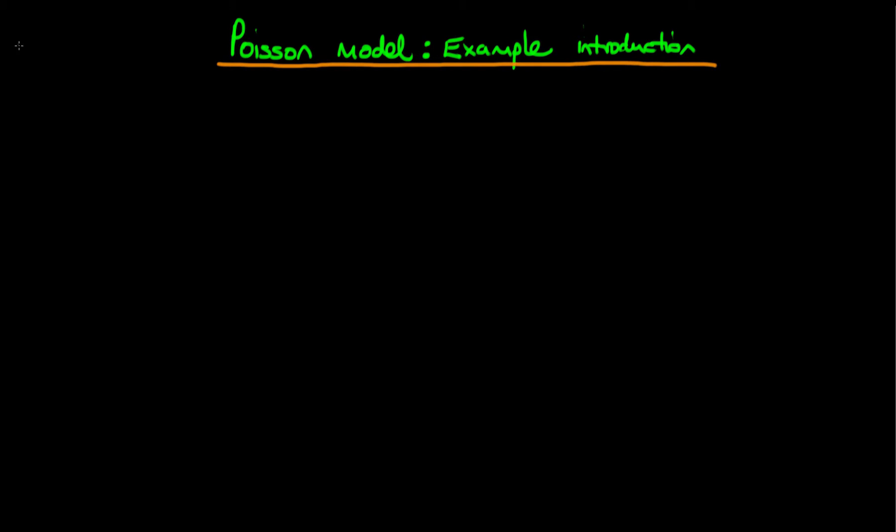We're going to start by introducing the situation and the example we're going to be looking at. We're going to look at the assumptions which underpin the modeling of our data via a Poisson model. And finally, we're going to talk about our goals of doing Bayesian inference on this particular example.